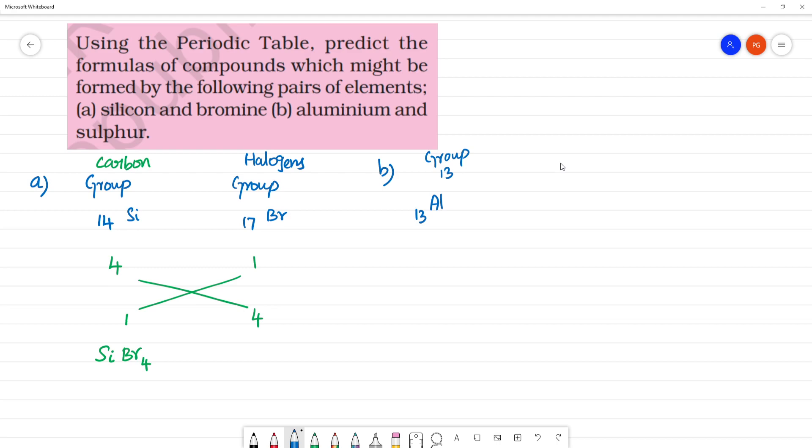We have sulfur. Sulfur comes under what family? Oxygen family. Oxygen family, what is the group? Group number 16.